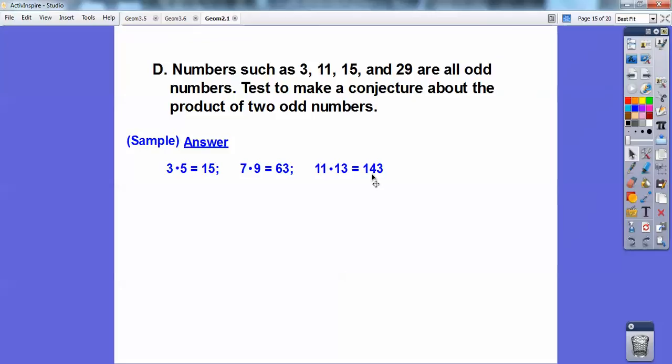So my conjecture, then, is this, that the product of two odd numbers is going to create another odd number.